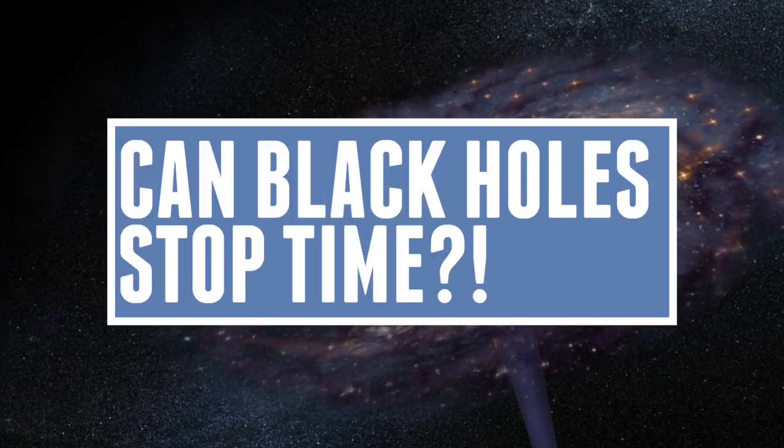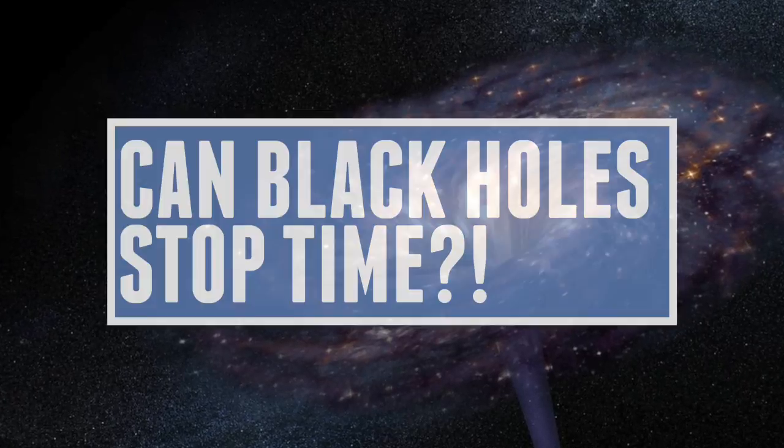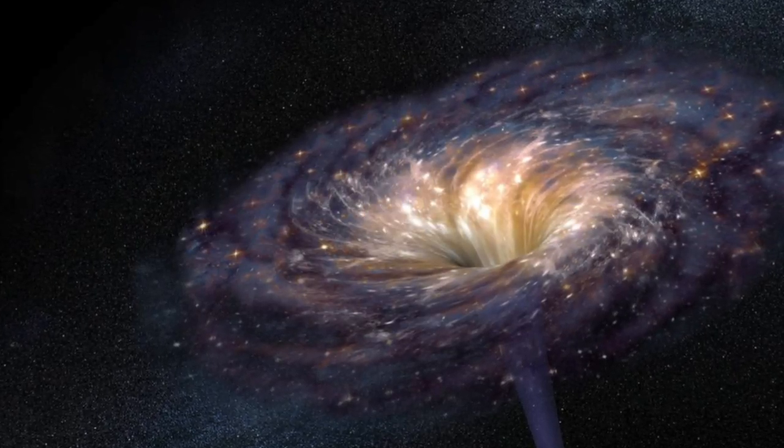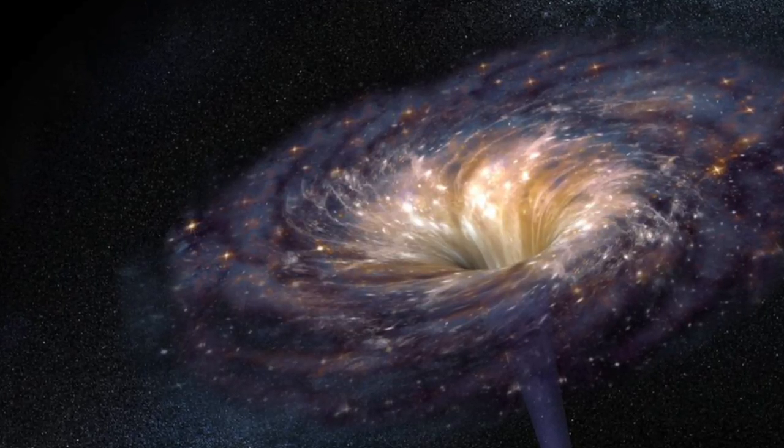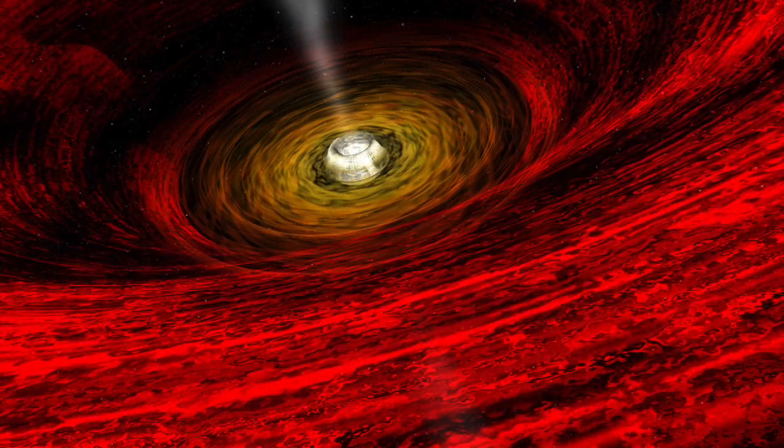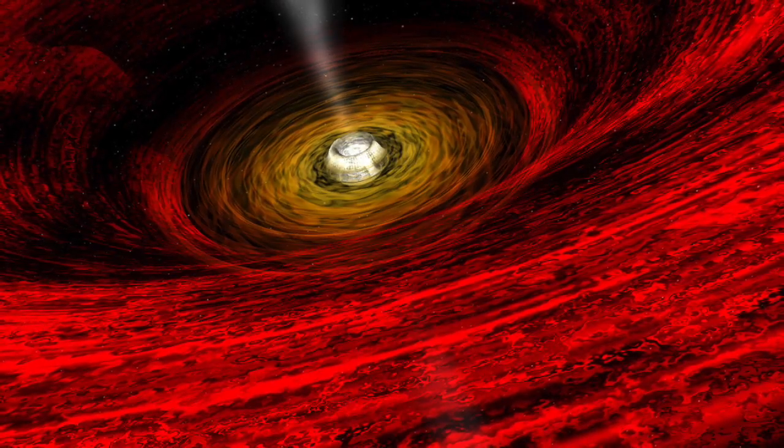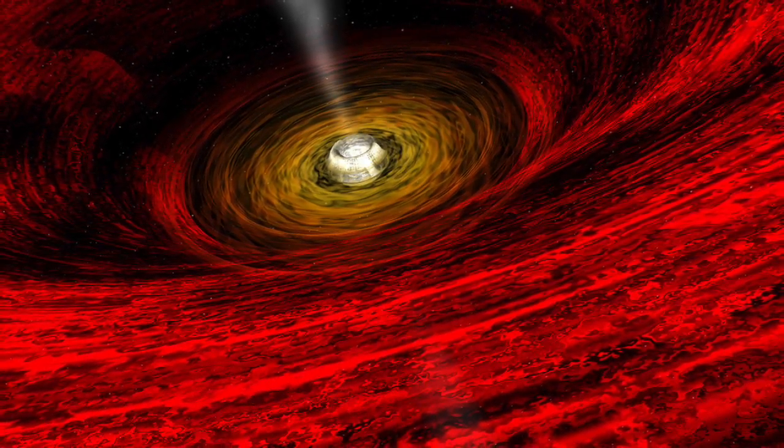Black holes are very compact objects, having such a large amount of mass in a very small volume. They also come in a range of different sizes. In astronomy there are usually two types of black holes, the stellar mass black holes and the supermassive black holes.